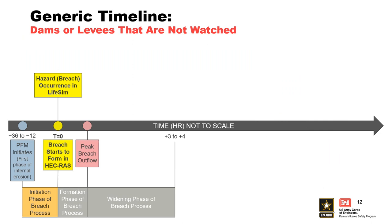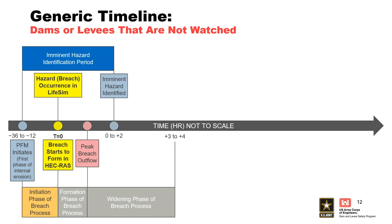This slide illustrates the differences in the timeline for an internal erosion failure mode for a dam or levee that is not watched — in other words, no eyes on the dam or levee. This often occurs for dams that are not staffed and the public is not nearby to detect a developing failure mode, or levees that are not being inspected or flood fought during an event. There is no intervention like the previous example. A key difference is that the imminent hazard identification likely occurs after the breach has formed and reports of flooding start to appear downstream of the dam or within the leveed area. It typically occurs zero to plus two hours after the breach starts to form, and in this example, it is shown after the peak breach outflow is released.